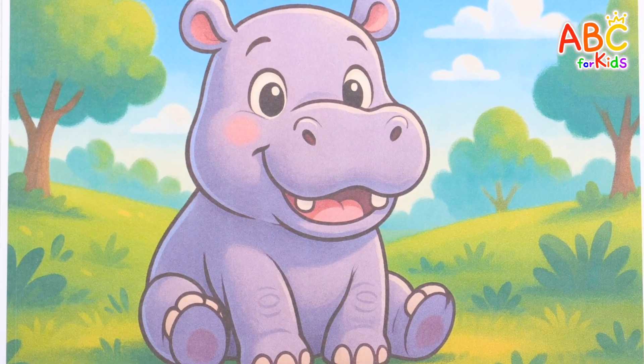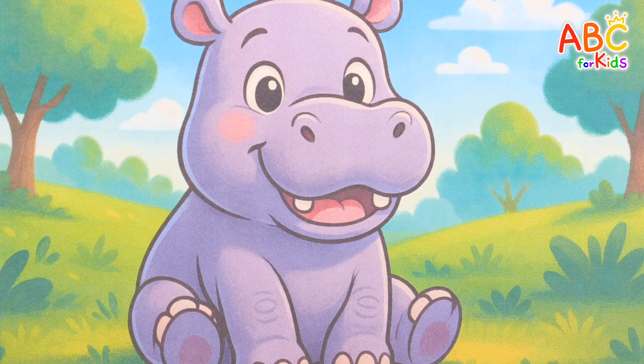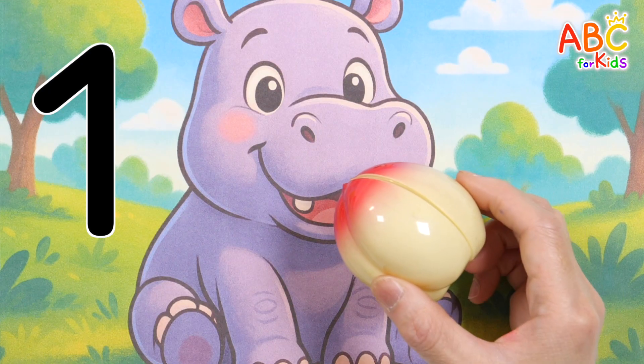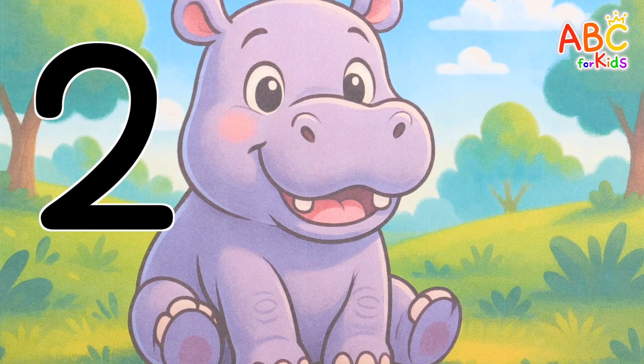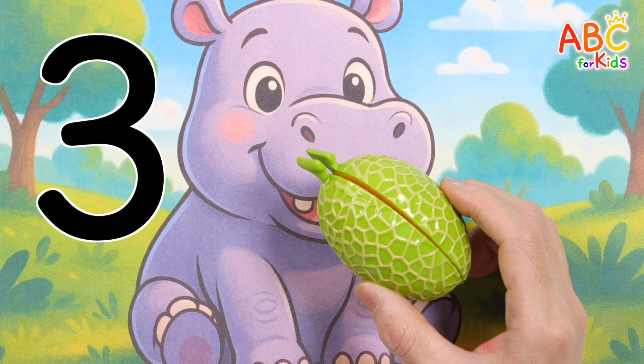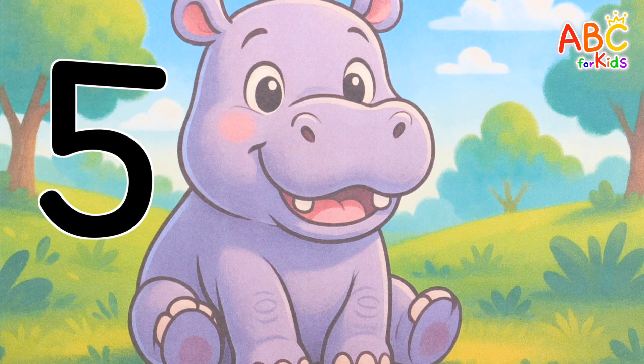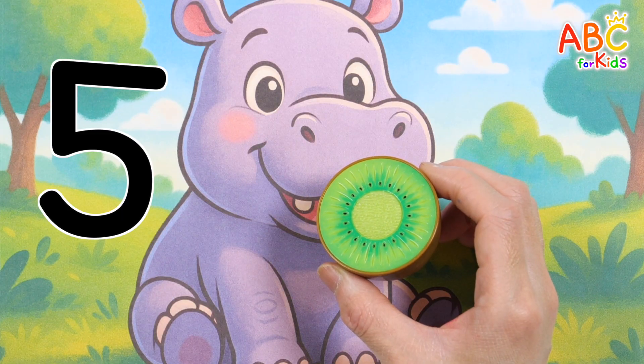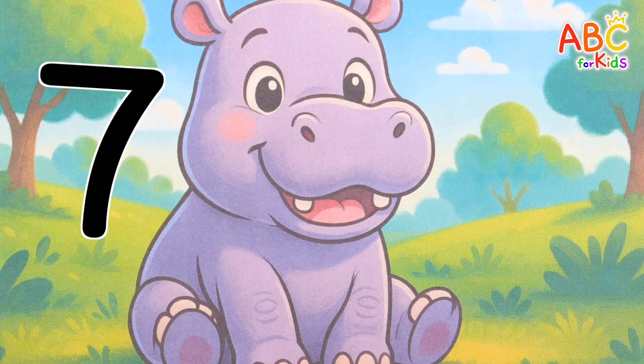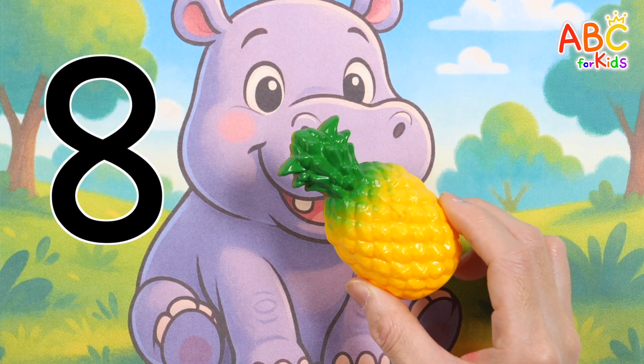The hippo wants to eat some fruits and veggies. Shall we count how many fruits and veggies the hippo eats? 1, 2, 3, 4, 5, 6, 7, 8, 9.